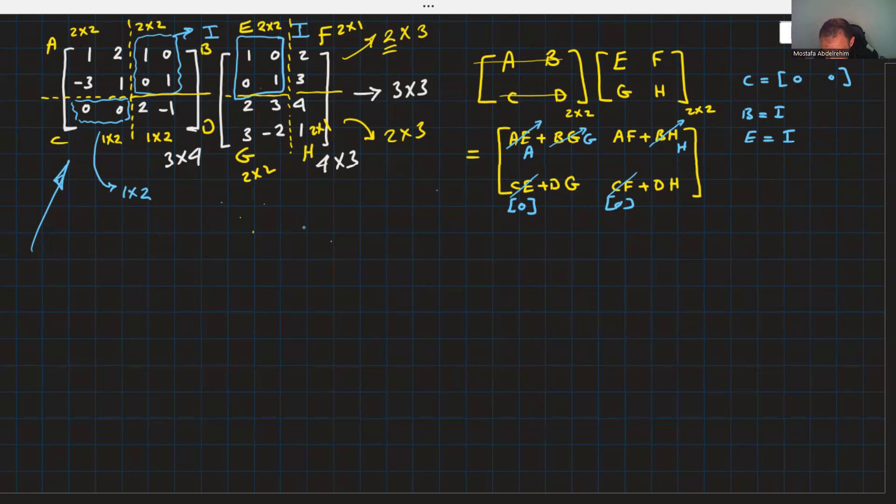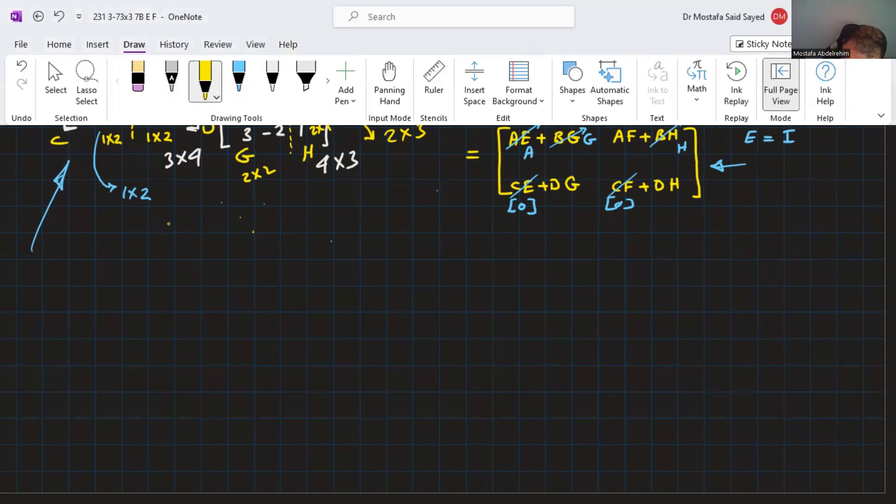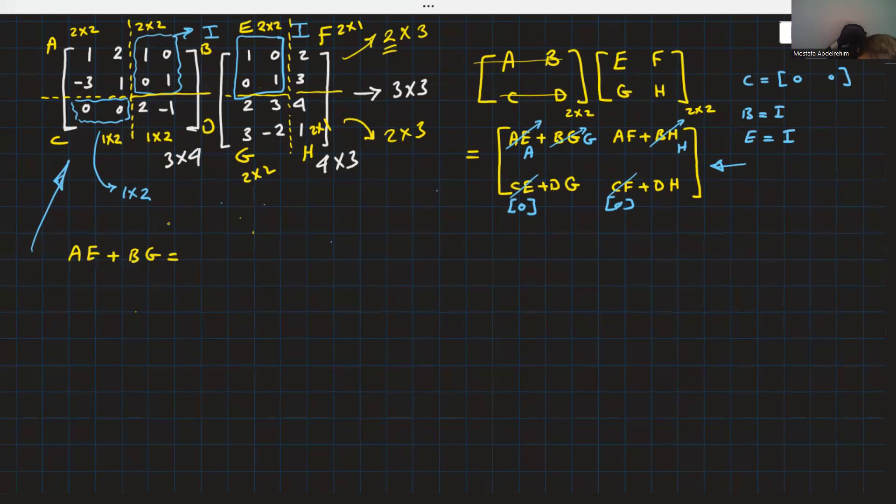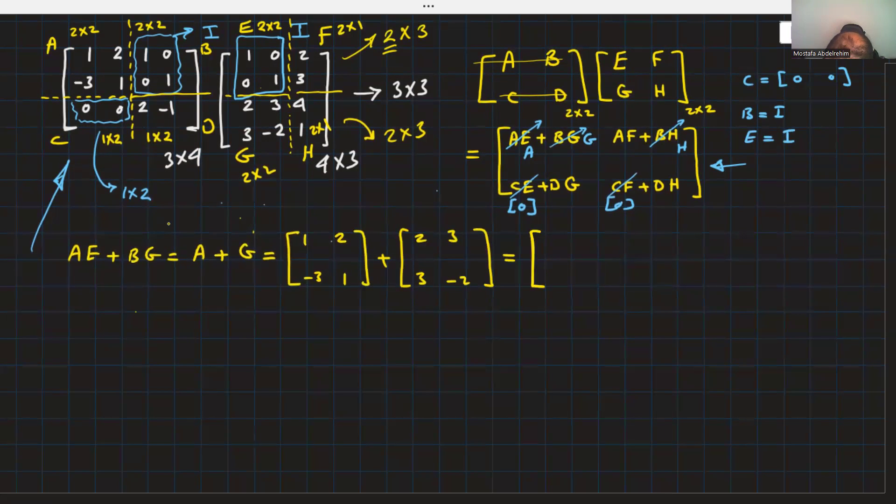Let's calculate this. The original question converted into that one. So, let's continue solving. We're going to take one by one. AE plus BG. This result in A plus G. So, you just add A and G. There is no multiplication. So, A is 1, 2, minus 3, 1. G is 2, 3, 3, minus 2. Add them together. 1 plus 2 is 3, 2 plus 3 is 5, minus 3 plus 3 is 0, 1 minus 2 is minus 1.